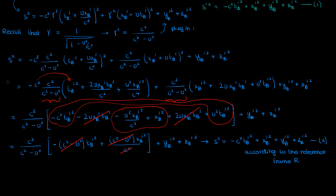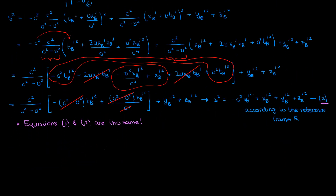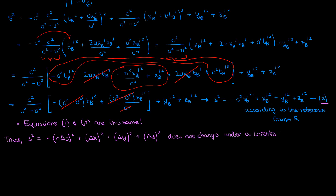You'll notice that the s squared equation in equation 2 and the s' squared equation in equation 1 are exactly the same. Even after the Lorentz transformation, the value of s squared didn't change — it was the same in the unprimed coordinates as in the primed coordinates. Since the value of s squared didn't change under a Lorentz transformation, it is invariant, just like how distance or the length of the stick was invariant under the simple rotation example at the start of the video.